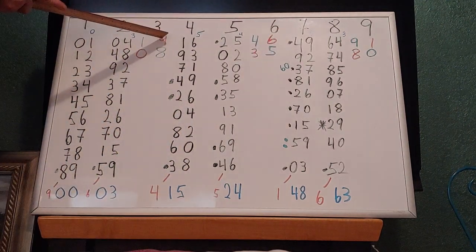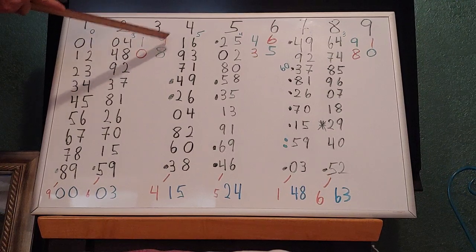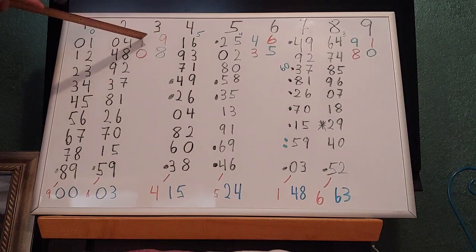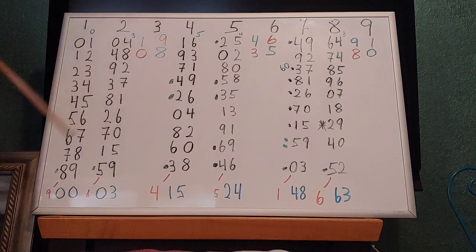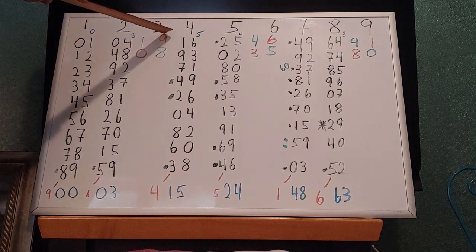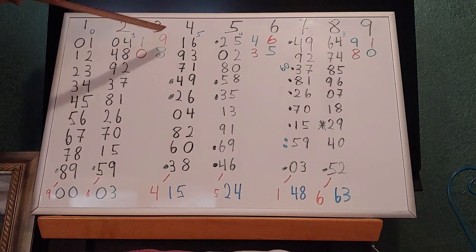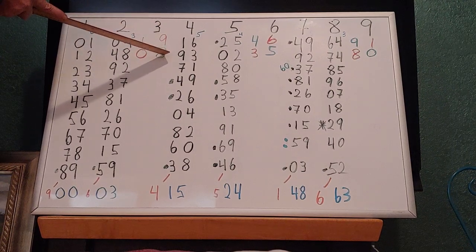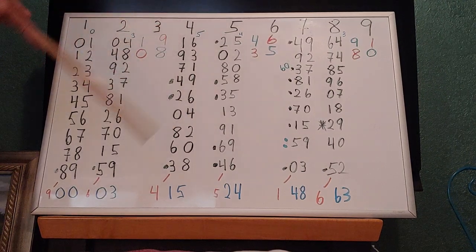3 squared is 9. 33 squared is 1089. 333 squared is 110889. 100 threes squared gives 99 ones, 1, 0, 99 eights, and 1, 9.